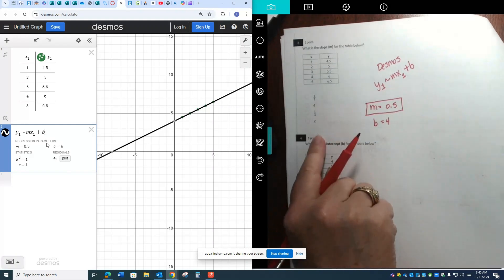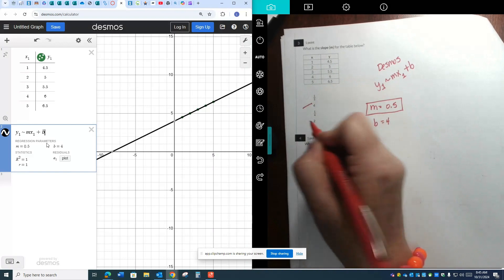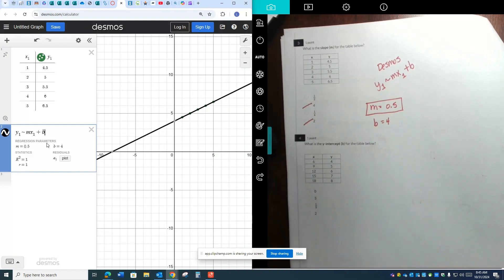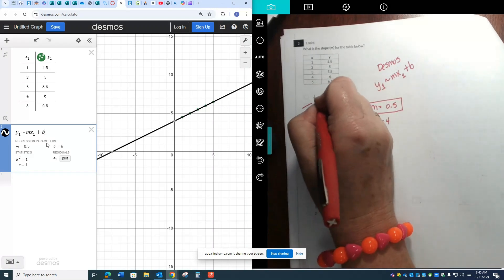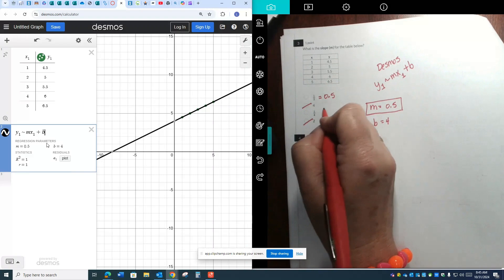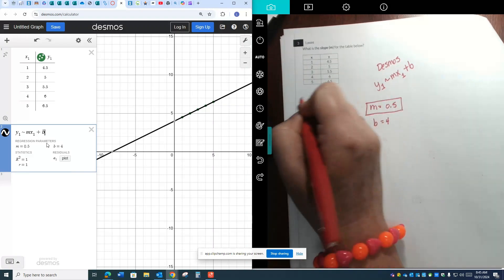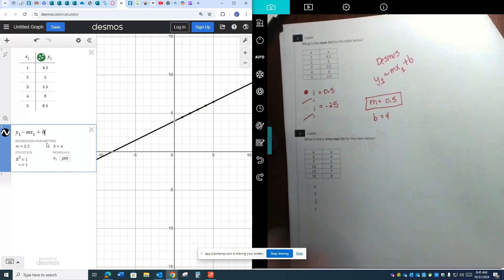So if it's asking me for the slope, it's asking me for this one. Now, none of my answer choices say 0.5, but one of them is equal to 0.5. I know it's not 4, and I know it's not 2. It's one of these fractions. If you put 1 half into the calculator, it'll tell you it's equal to 0.5. If you put 1 fourth in, it'll tell you it's equal to 0.25. So this one is my answer.